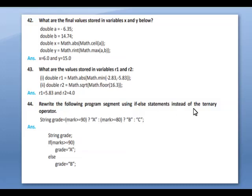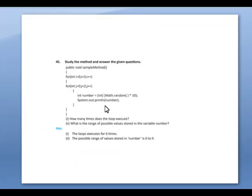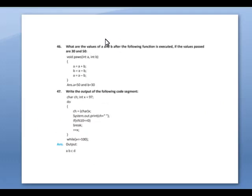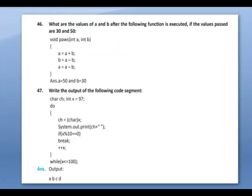Rewrite the following using ternary operators. Next, study the method and answer the given questions from the programming segment. What are the values of a and b after the following function is executed if the values passed are 30 and 50? You have to do the calculation and write the answer.